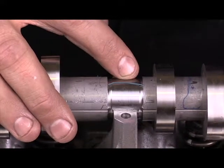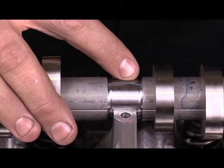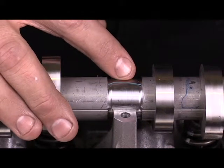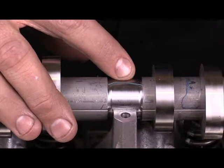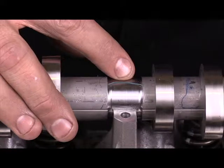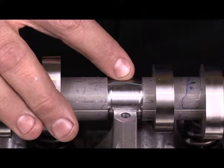So in order to measure the clearance, the oil clearance, or the thickness of the oil film that would be in between the cap and the journal, I need to use a plastic gauge.